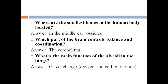Where are the smallest bones in the human body located? They are located in the middle ear — that is the ossicles. Which part of the brain controls balance and coordination? The cerebellum. What is the main function of the alveoli in the lungs? Gas exchange.